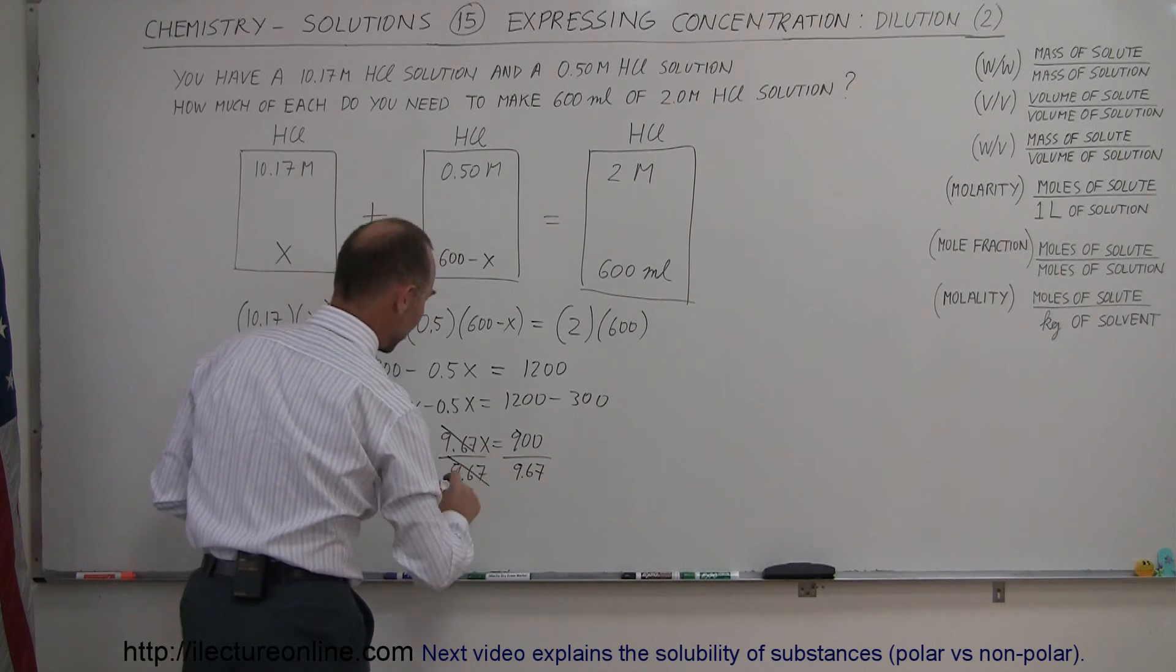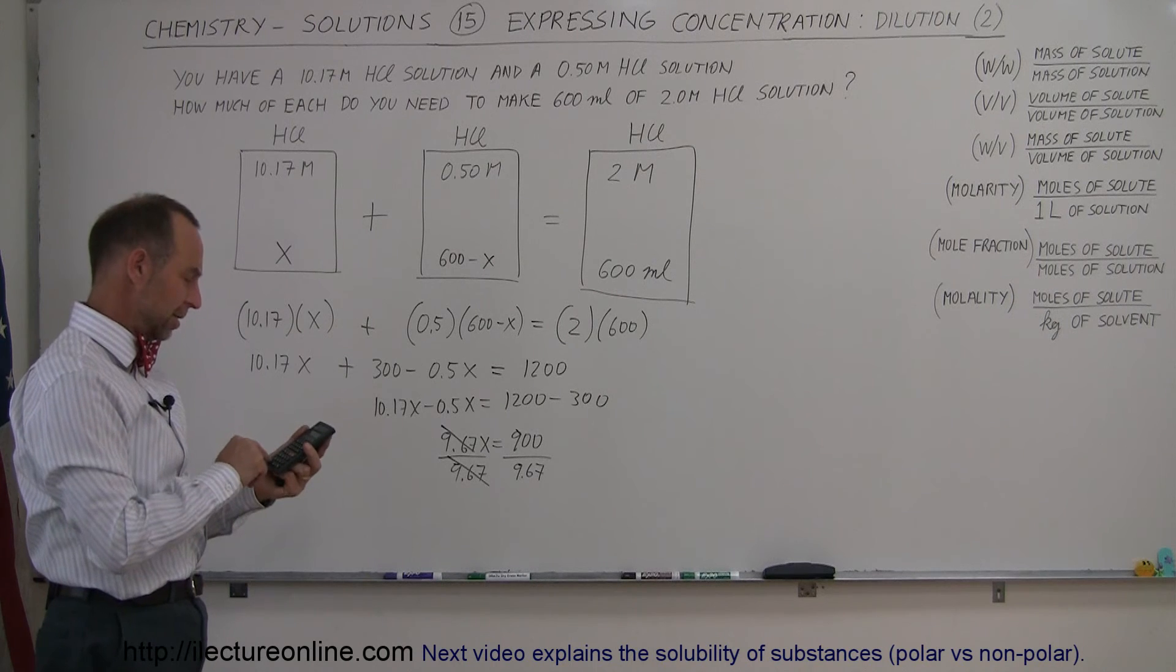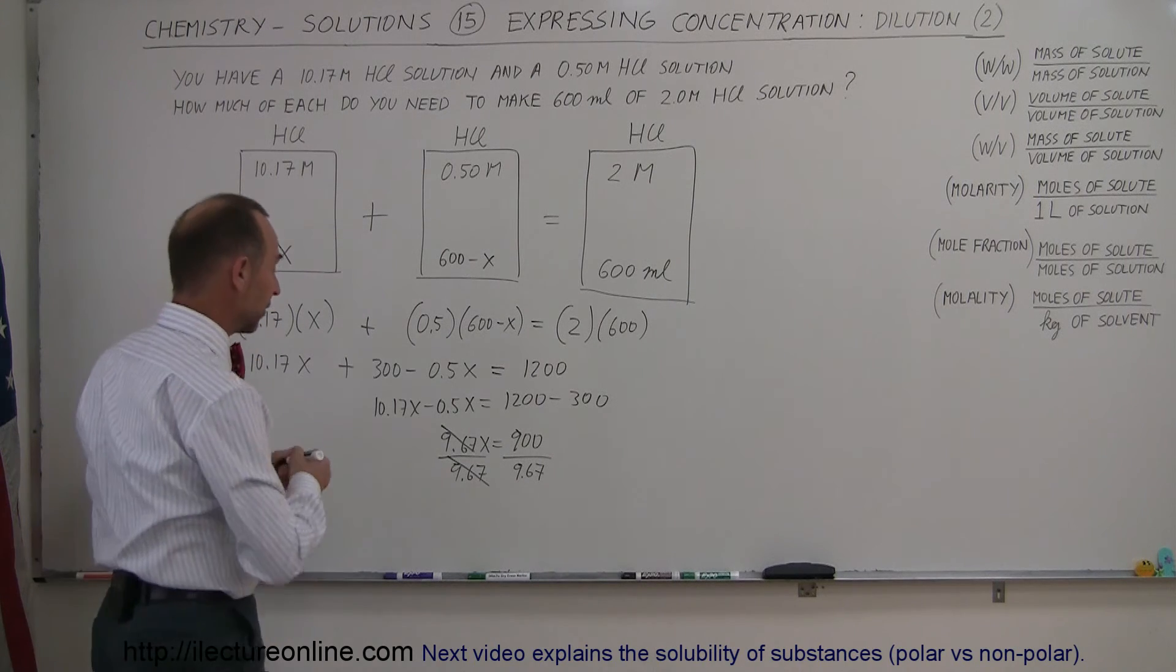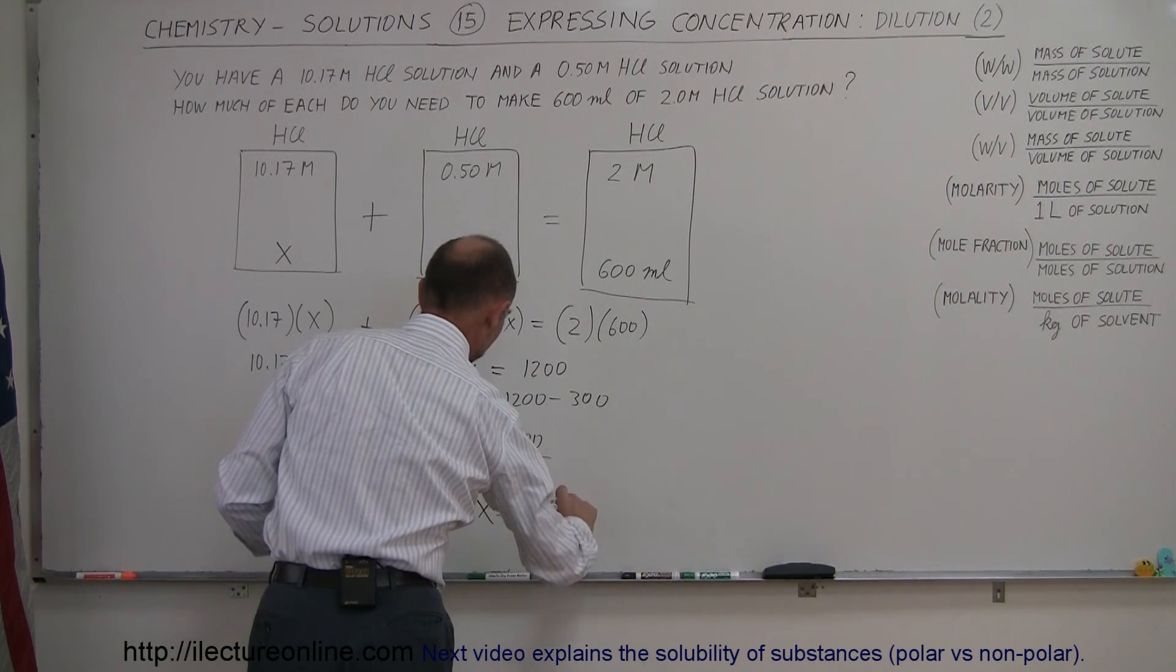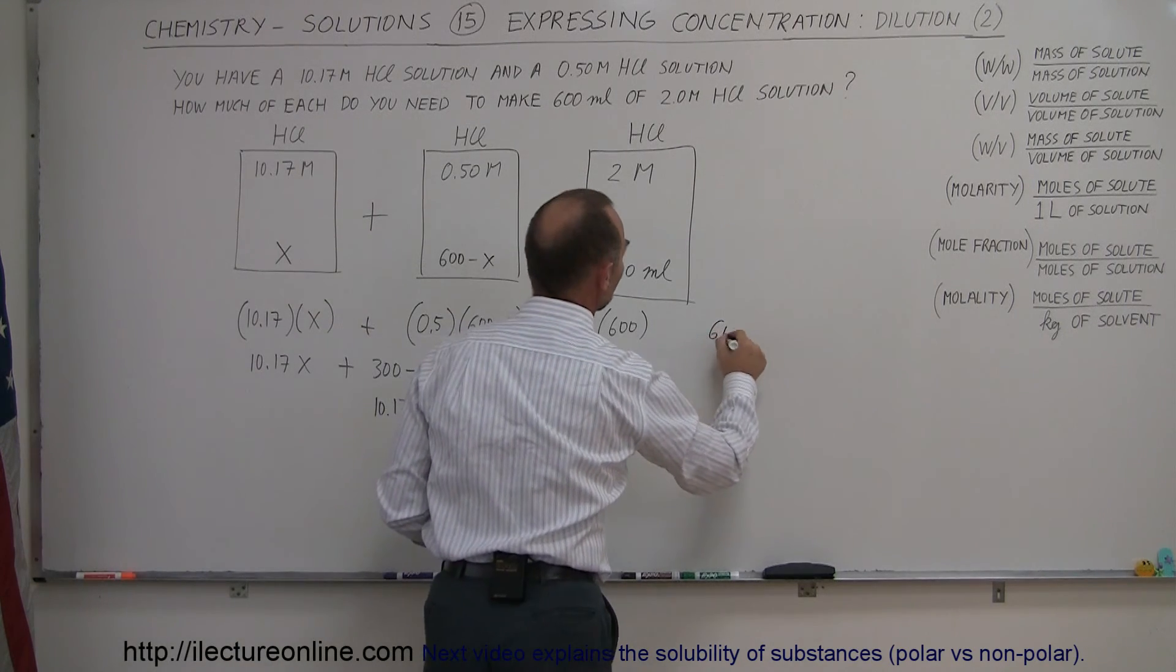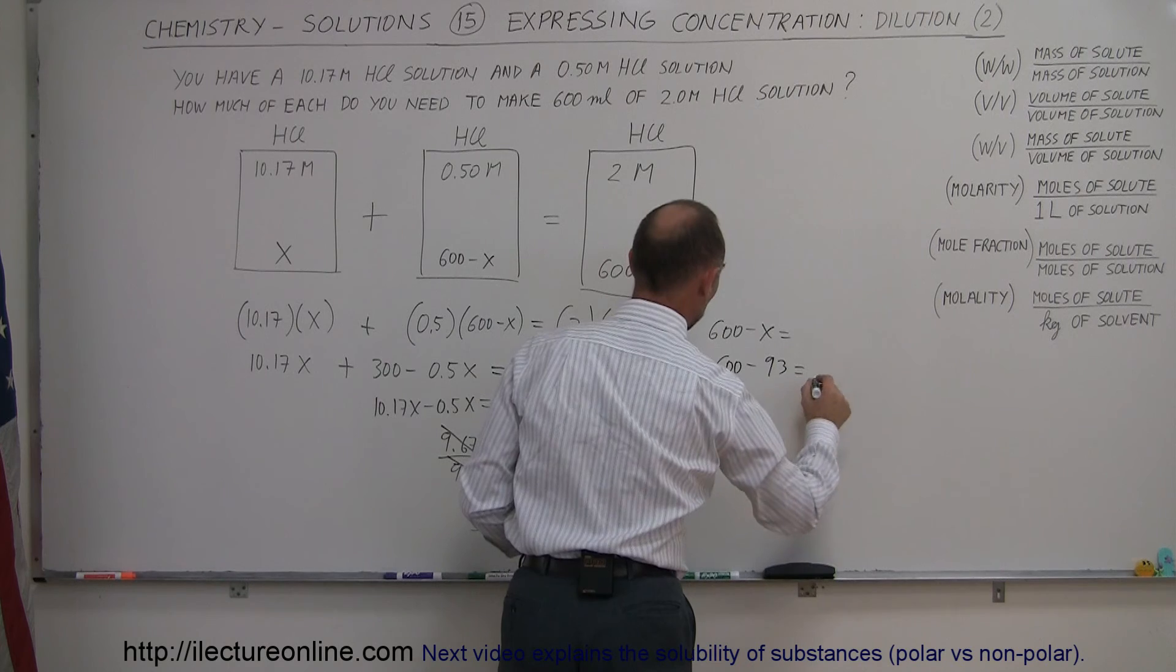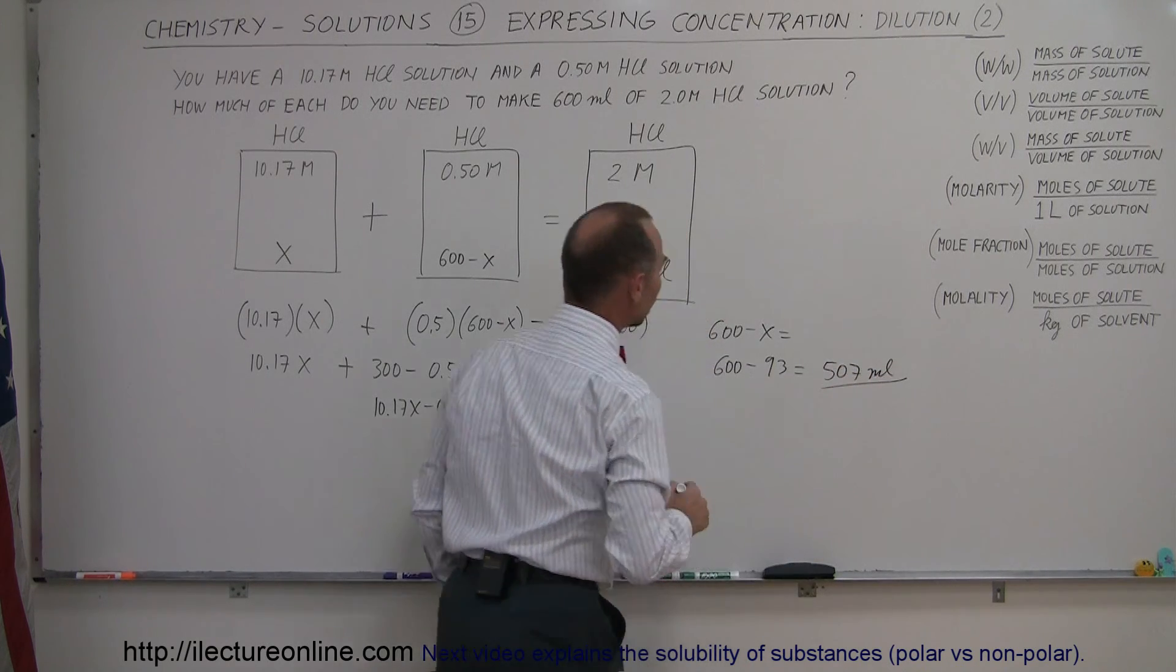That means that cancels out. And now we're left with x equals, let's see here, 900 divided by 9.67. It looks like we need 93 milliliters. So x equals 93, of course the units are milliliters, of this solution, which means 600 minus x equals 600 minus 93, which is equal to 507 milliliters of the other solution.